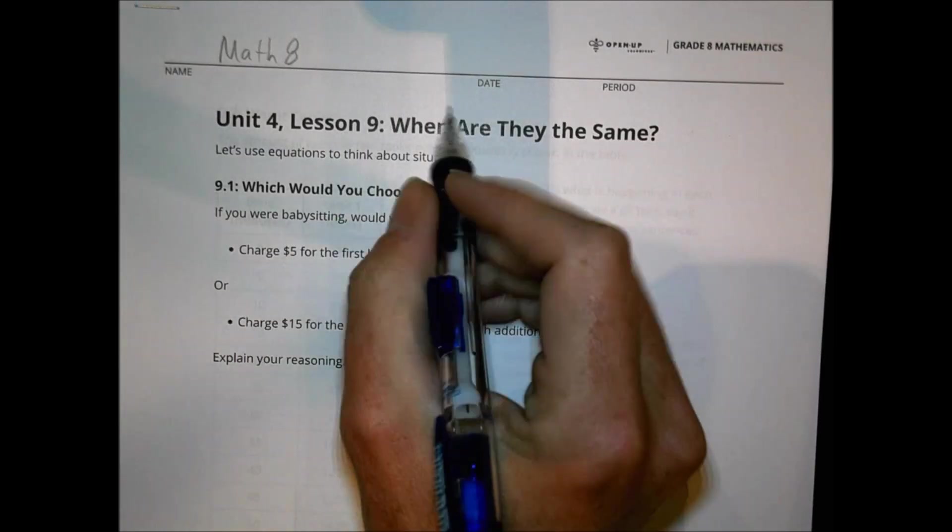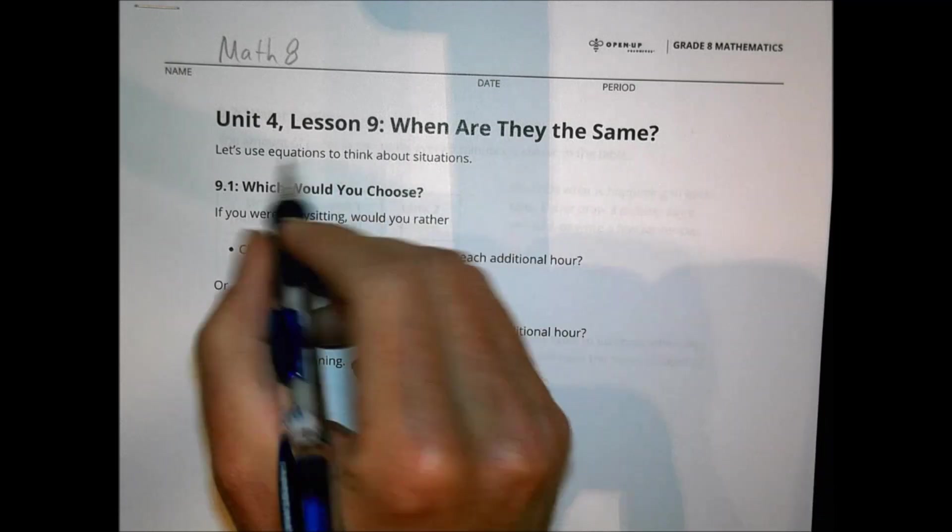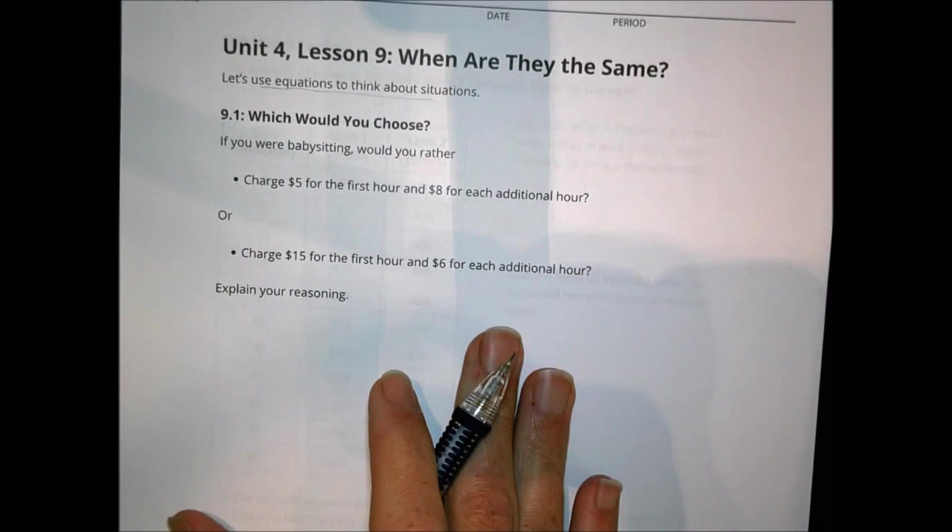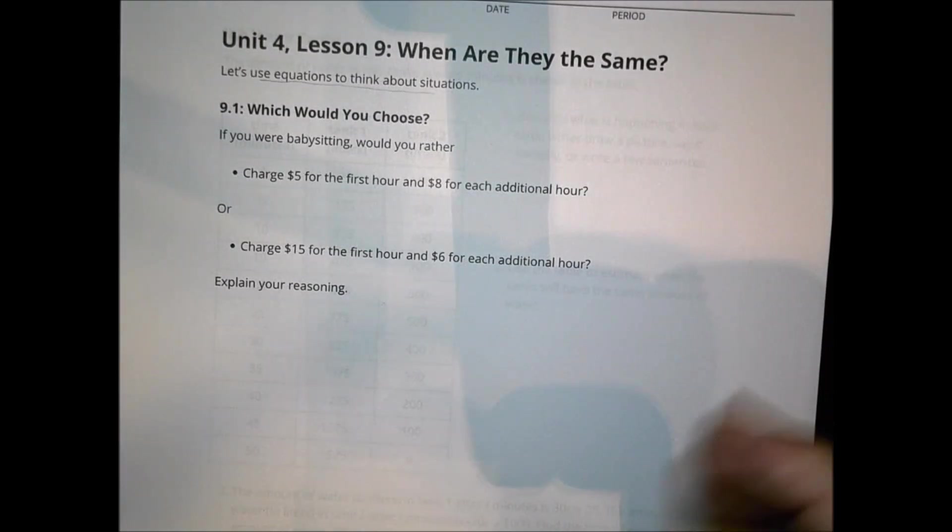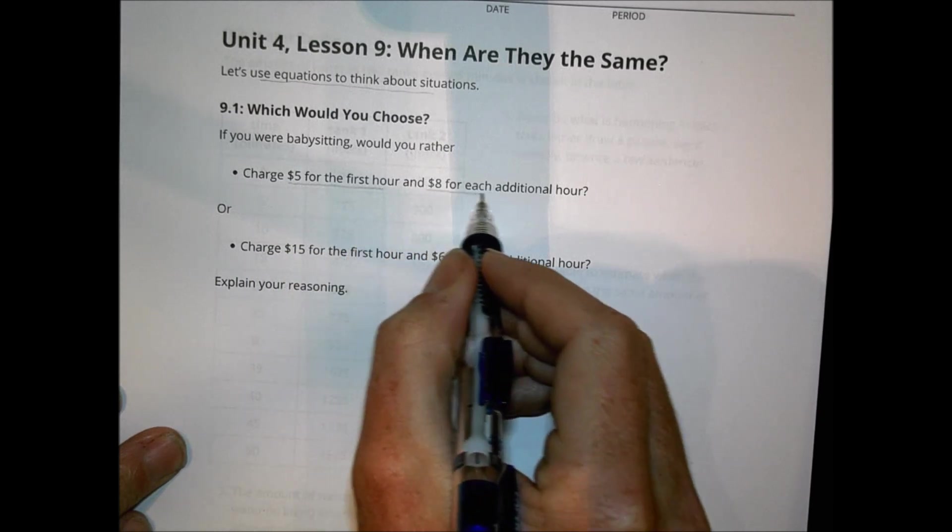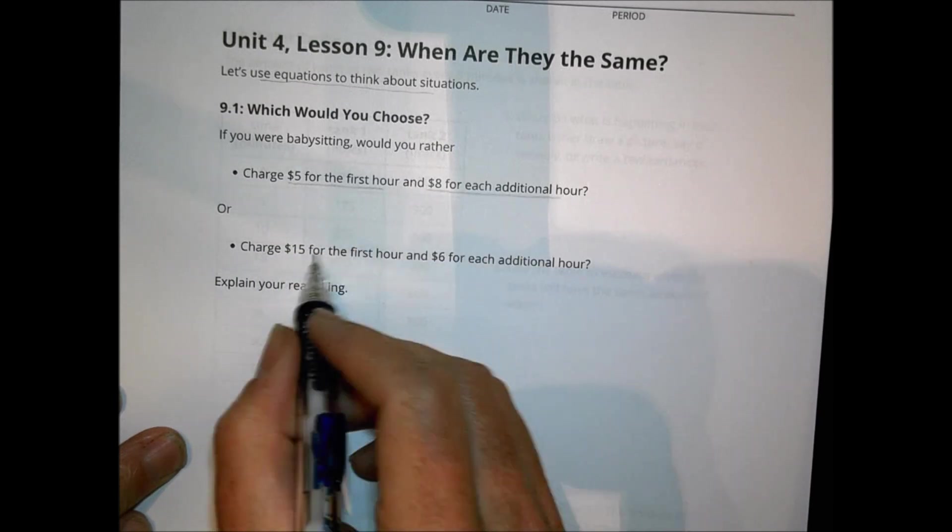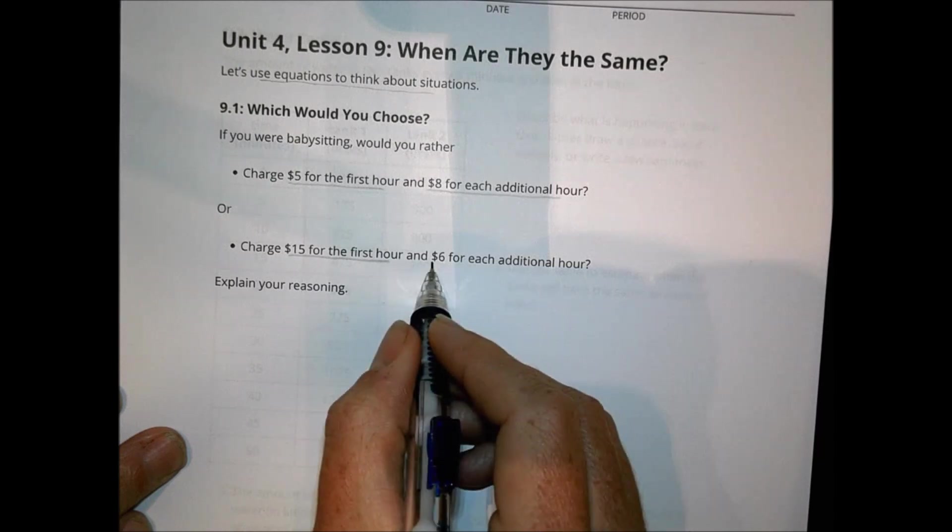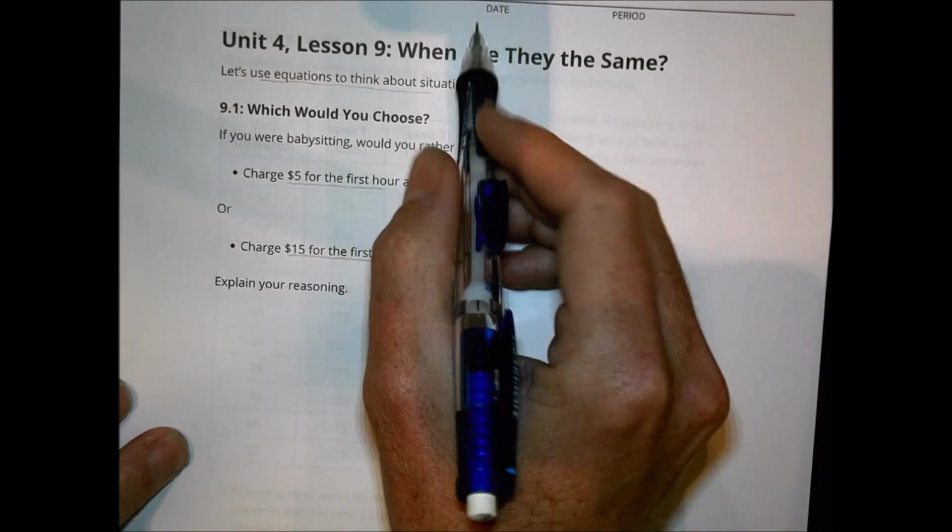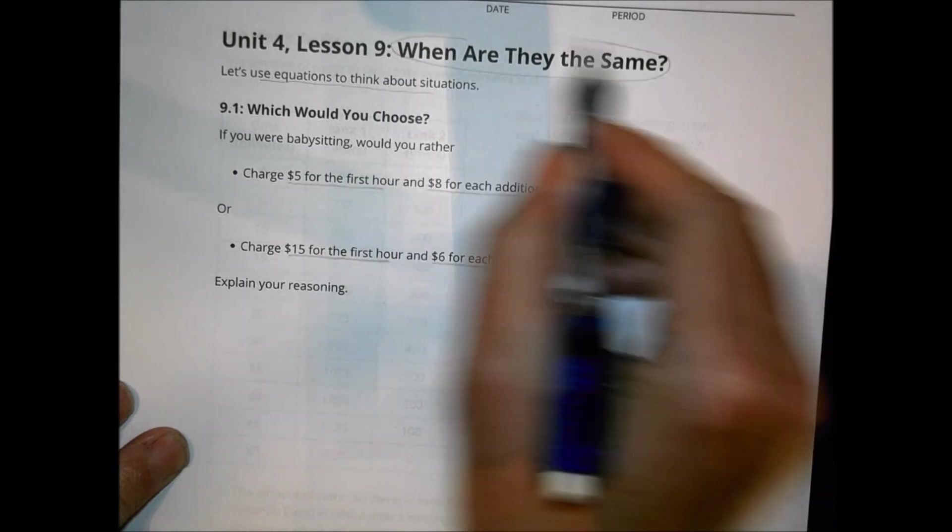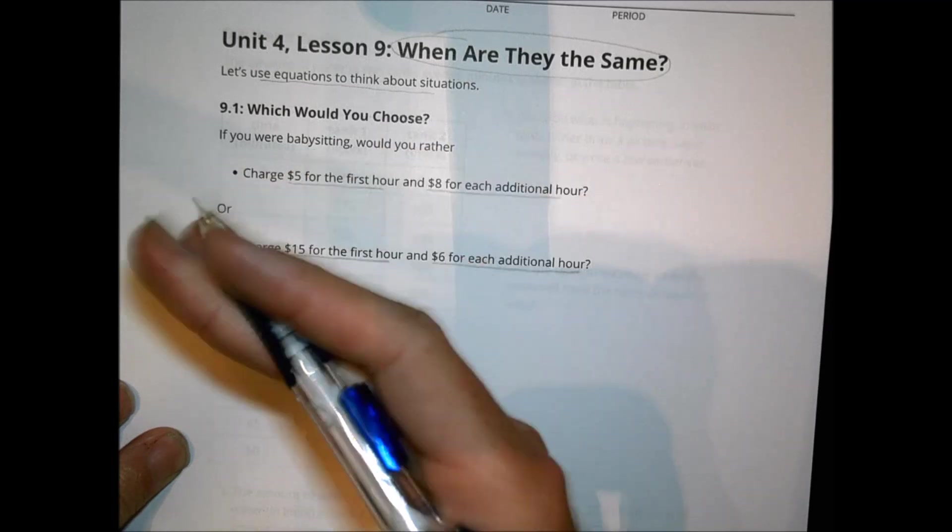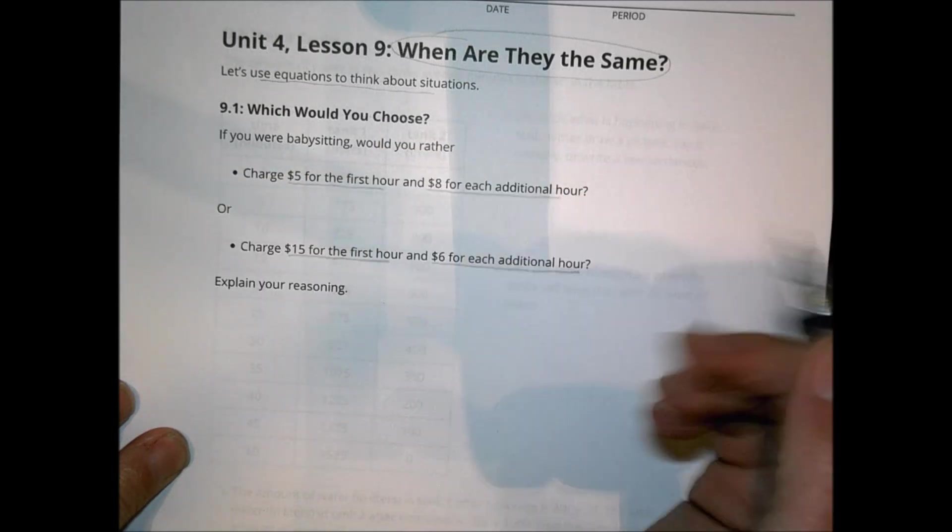Hey, this is Math 8, Unit 4, Lesson 9, called When Are They the Same? We're going to use equations to think about different situations. The first activity says, which would you choose? If you're babysitting, would you rather charge $5 for the first hour and then $8 for each additional hour, or would you rather charge $15 for the first hour and $6 for each additional hour? The lesson's focus is called When Are They the Same. We're having two equations that are going to be adding more money to how much you're making at a different rate.